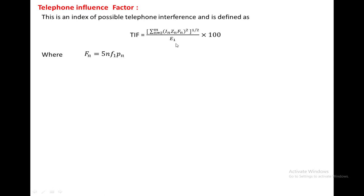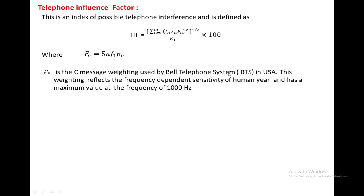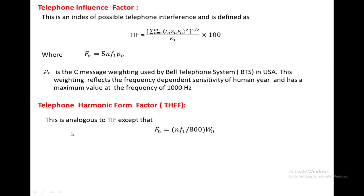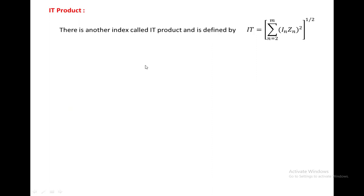The Telephonic Influence Factor (TIF) is defined as TIF = (Σ[N=M] (IN · ZN · FN)²)^(1/2) / E1 × 100, where FN is the message weighting used by the Bell telephone system in the USA. This weighting reflects the frequency-dependent sensitivity of the human ear, with a maximum value at 1000 Hz. The Telephone Harmonic Form Factor (THFF) is similar to TIF and is defined as FN = (N · F1 / 8000) · ΩN, where ΩN is the psophometric weight at harmonic order N. The IT product is another index defined as IT = (Σ[N=M] (IN · ZN)²)^(1/2), and the KIT product equals the IT value divided by 1000.